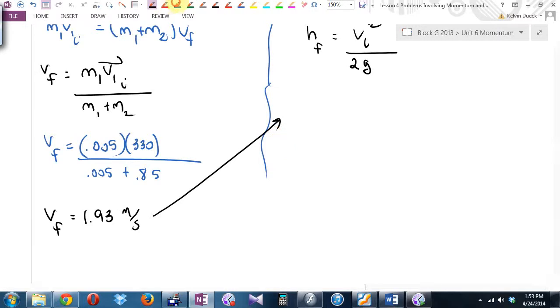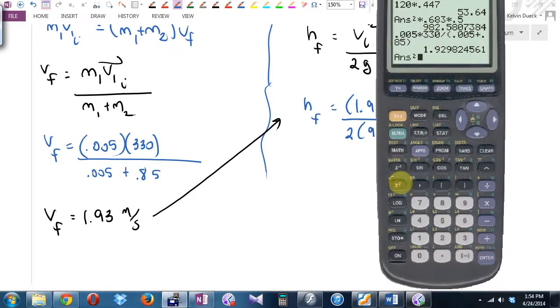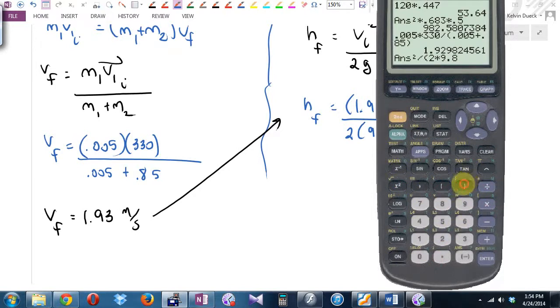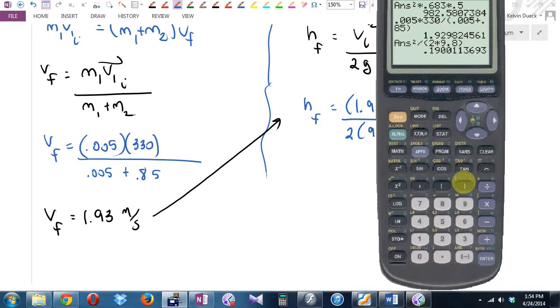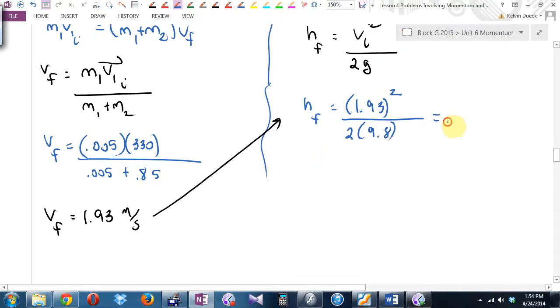Now, we're not done. We can now plug that in over here. The final height is going to be 1.93 squared divided by 2 times 9.8. I get 0.19. It's about 20 centimeters, 0.19 meters. About that high.